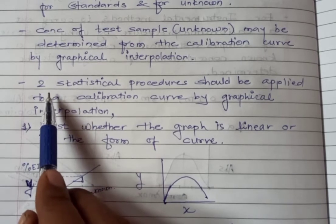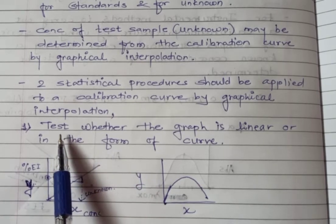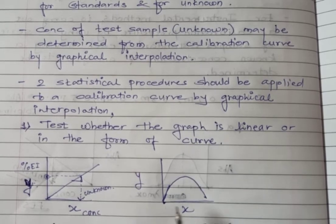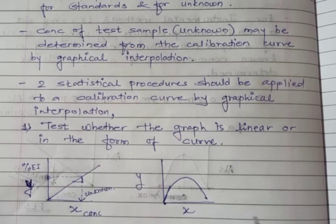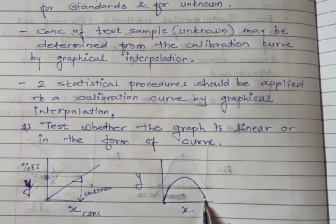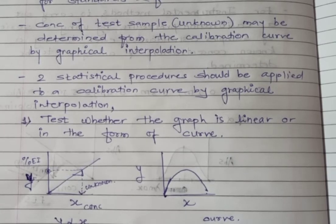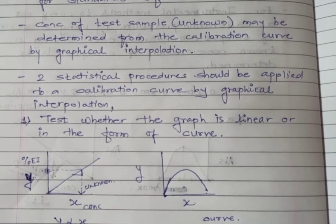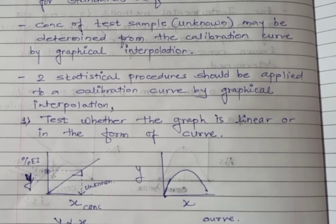Next, two types of statistical procedures should be applied to a calibration curve by graphical interpolation. First, you have to check whether the graph is linear or in the form of a curve. One type is linear, where y is directly proportional to x; the other is a curve shape or hyperbola. Second, we have to find the best straight line or curve through the data points if all points do not fall exactly on the line — that is, if there is scattering of points.